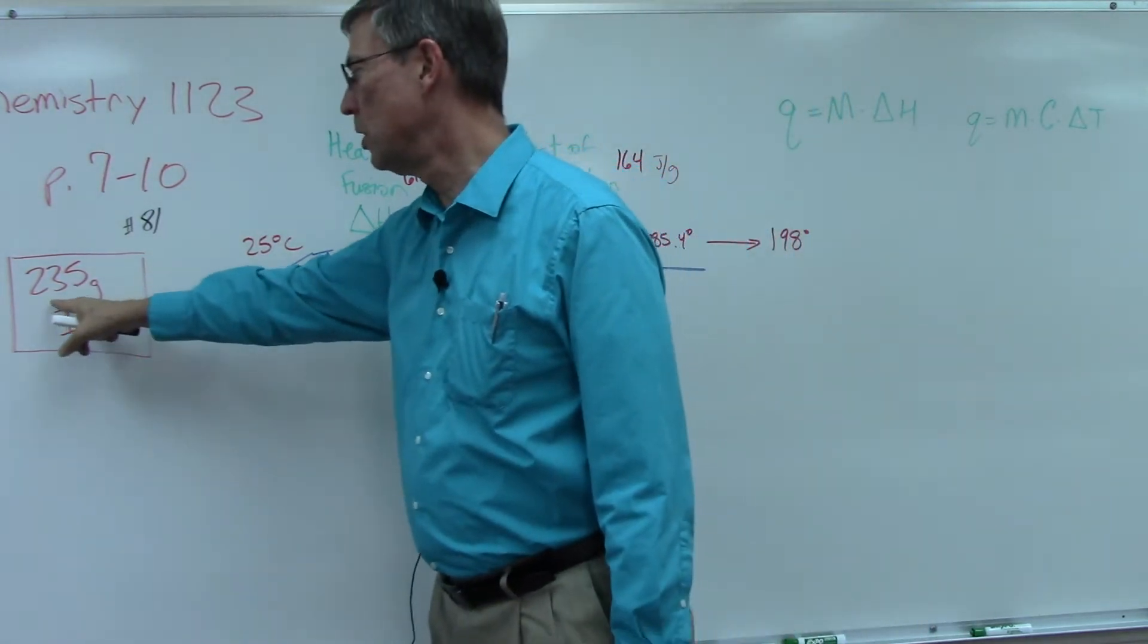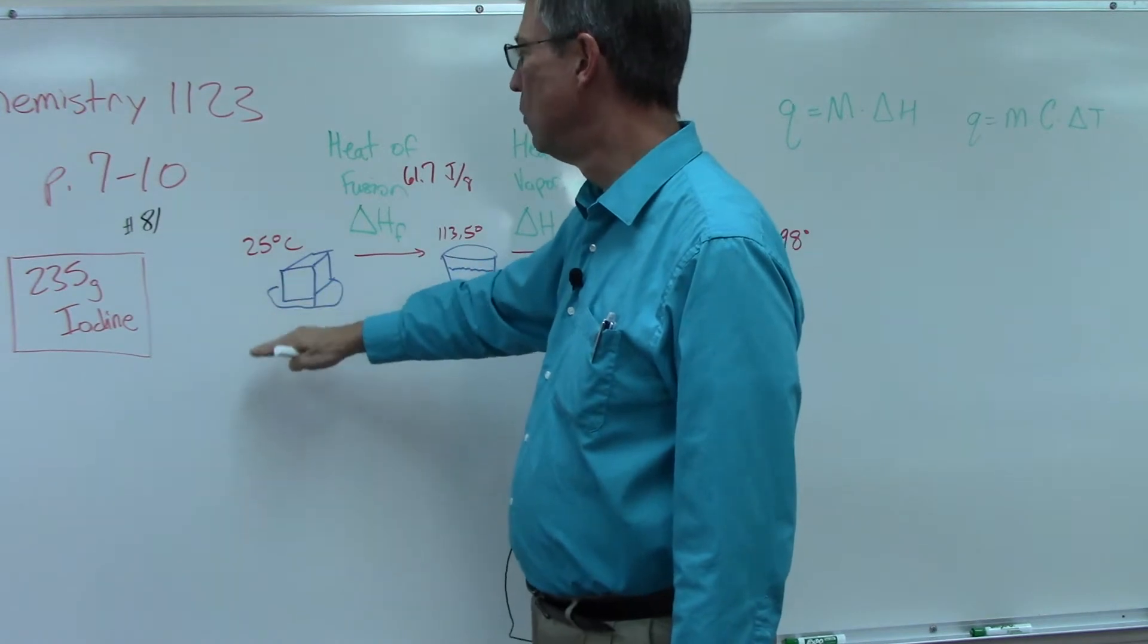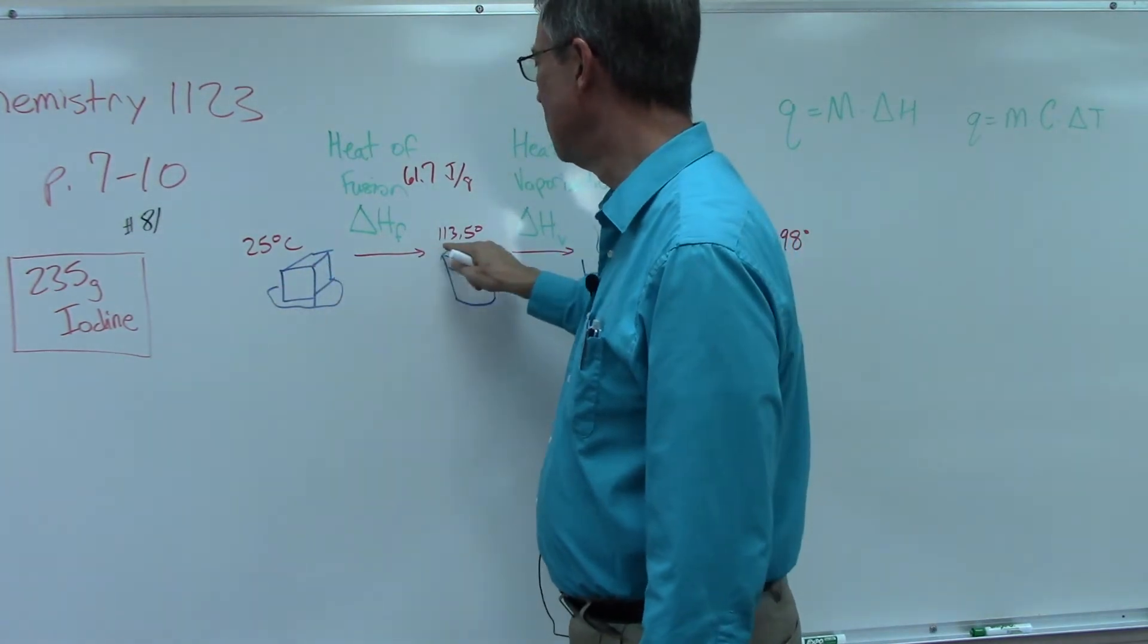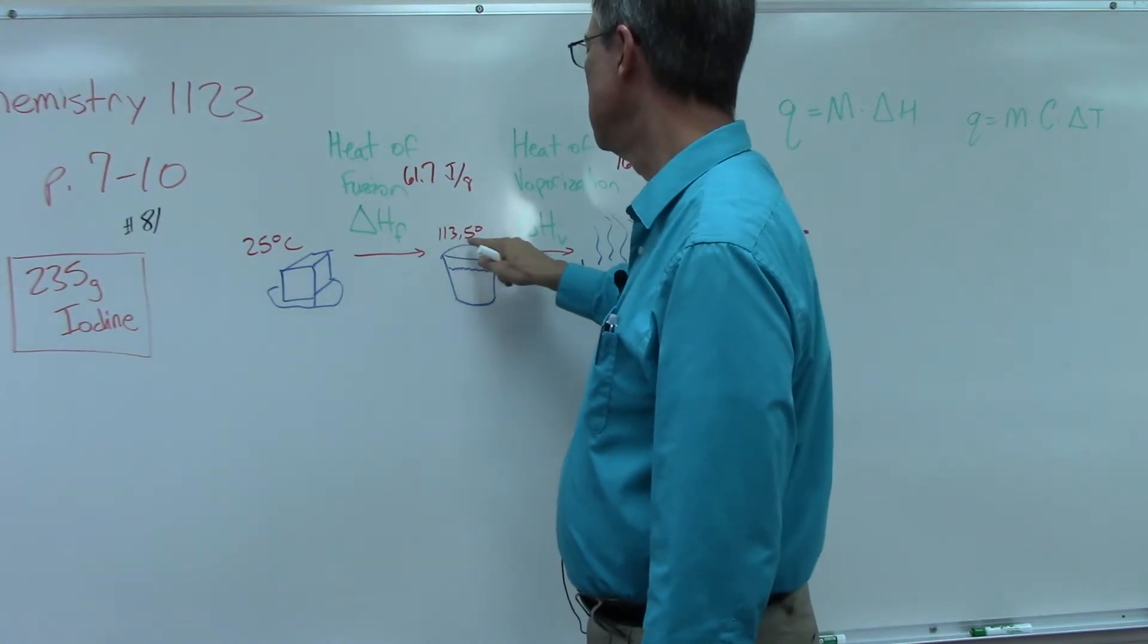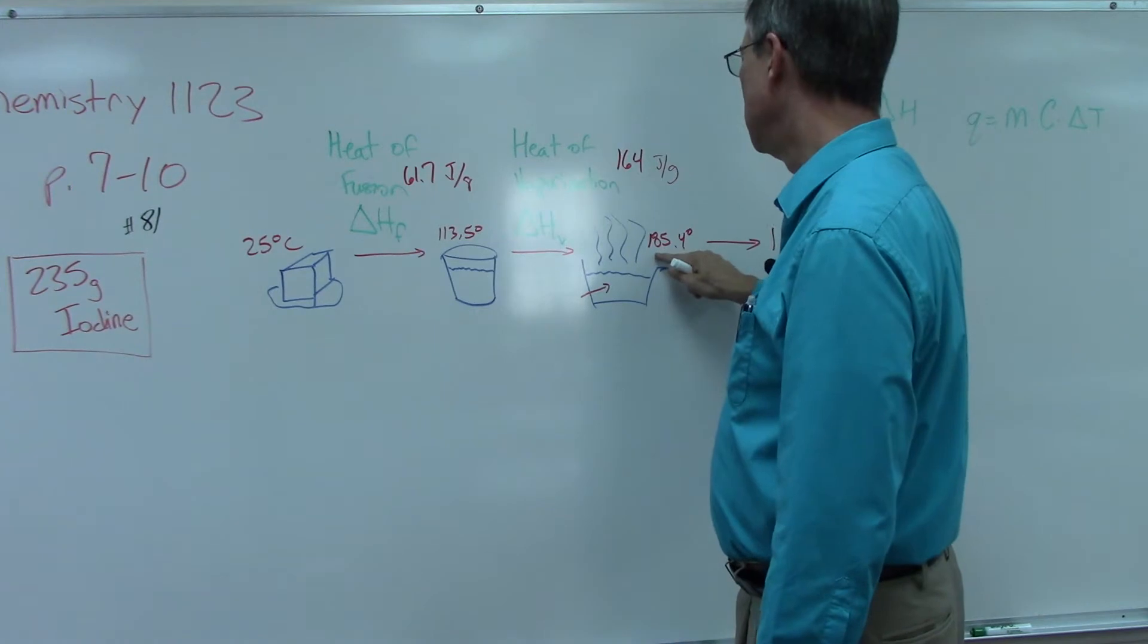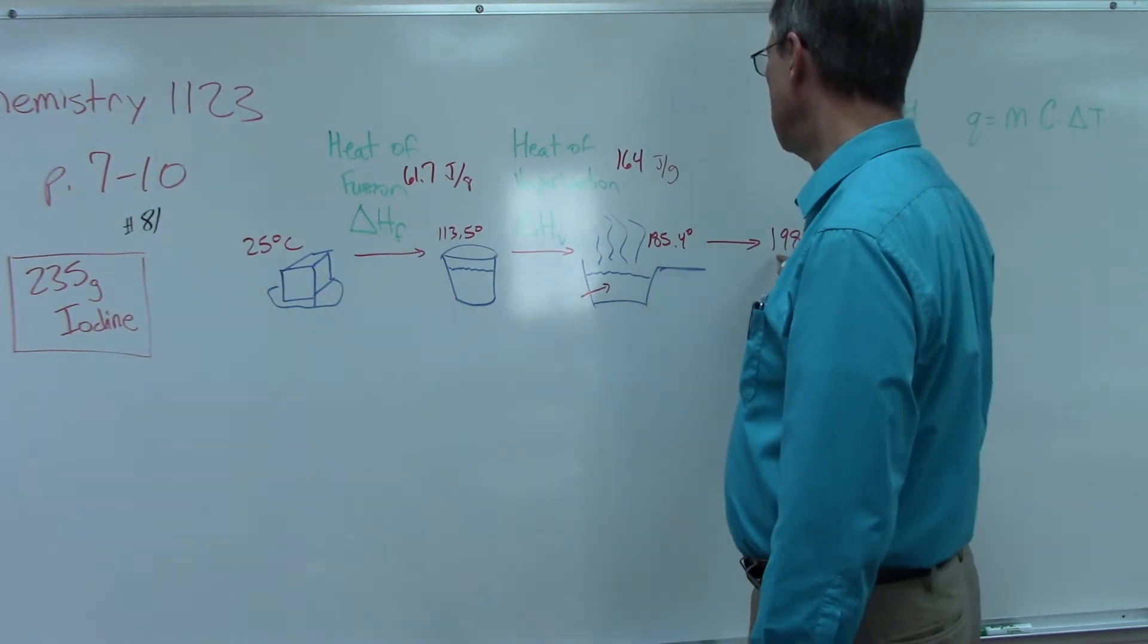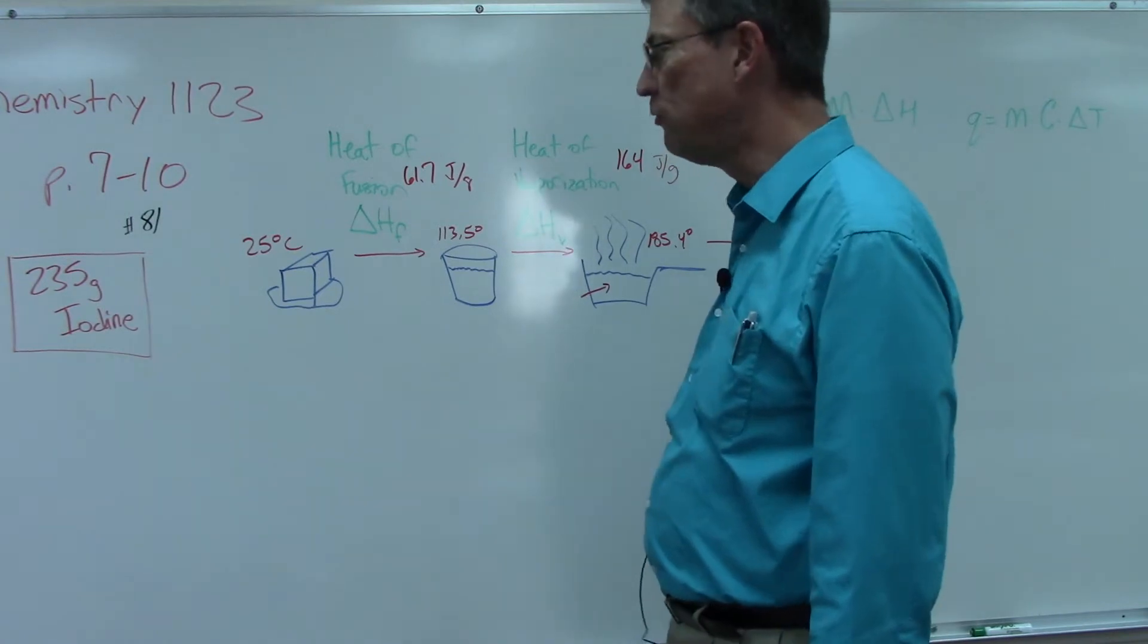We know we're starting with this mass at this temperature, raising it to get to the melting point. Then it melts and stays at that temperature until we get it to the boiling point. At the boiling point it stays there and then we raise the steam of iodine up to 198 degrees.